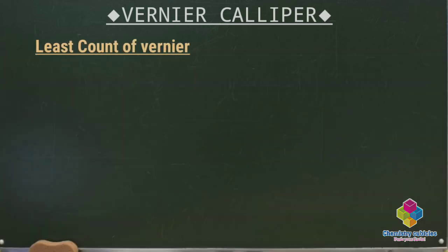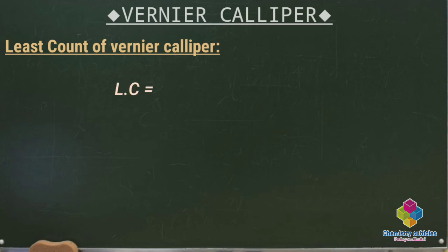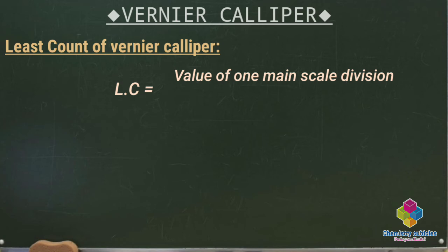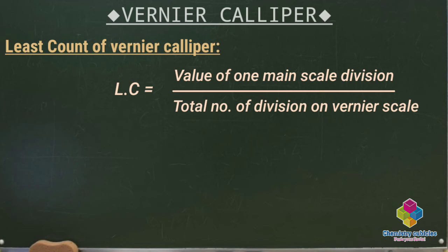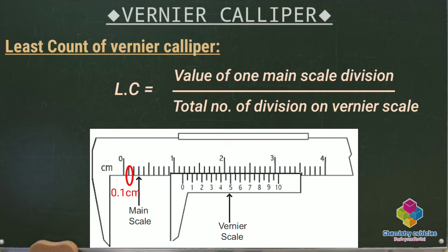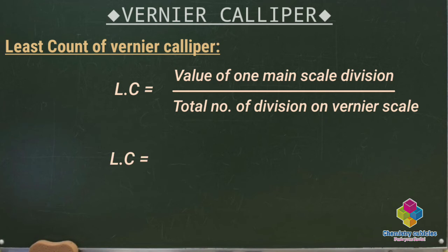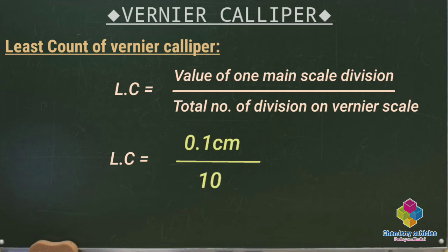Now let's see what is the least count of a vernier caliper. The least count equals the value of 1 main scale division divided by the total number of divisions on the vernier scale. The value of 1 main scale division is 1 millimeter or 0.1 centimeter. If the total number of divisions on the vernier scale is 10, the least count comes out to be 0.01 centimeter. Hence, the least count of a vernier caliper with 10 vernier divisions is 0.01 centimeter.